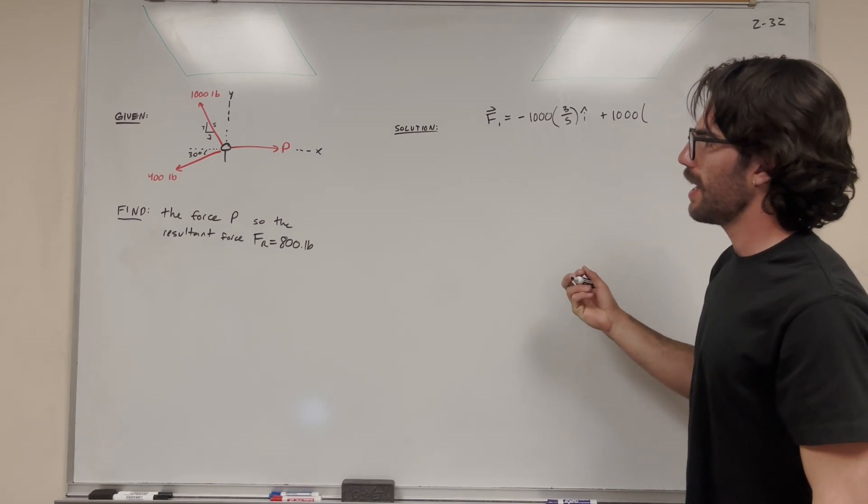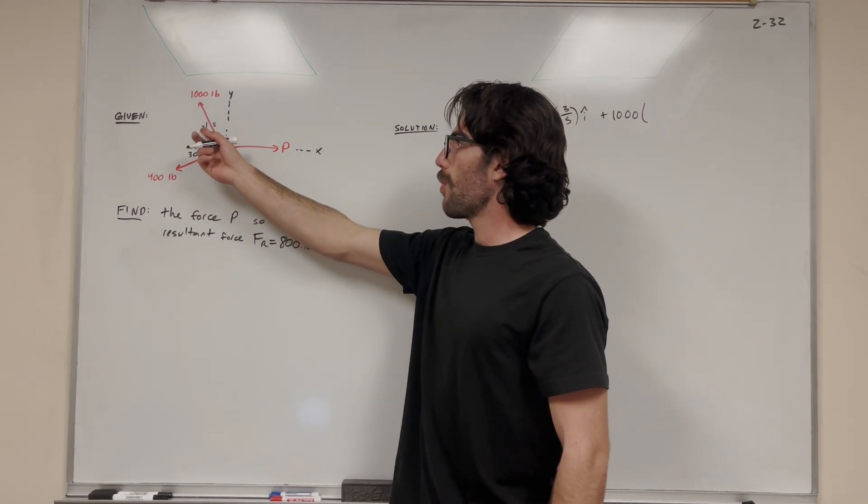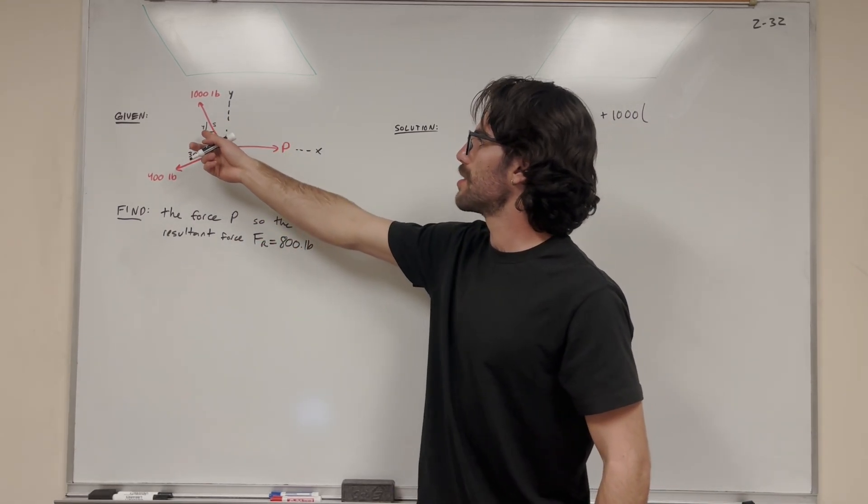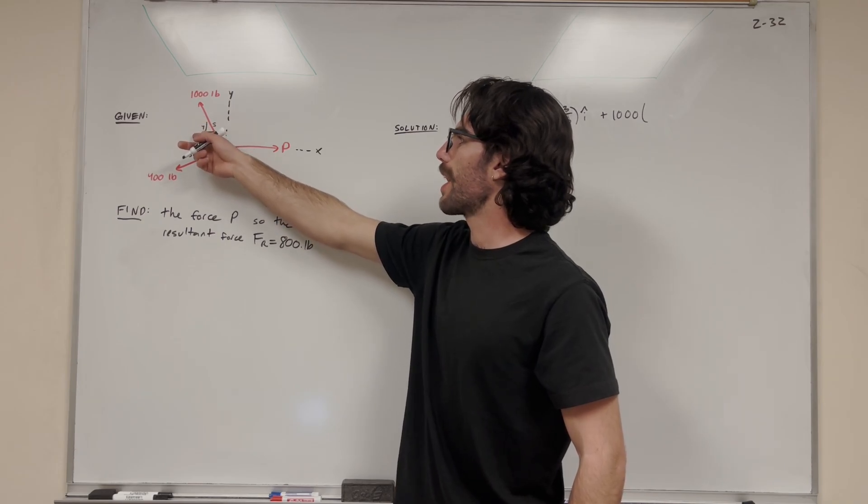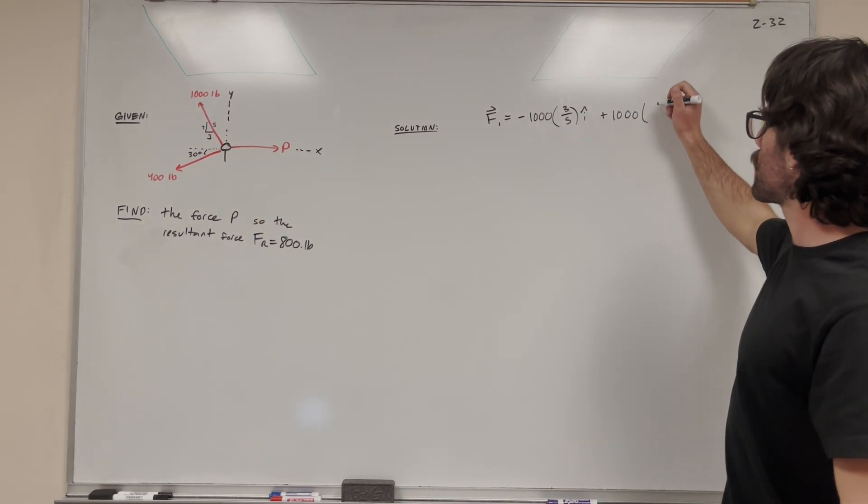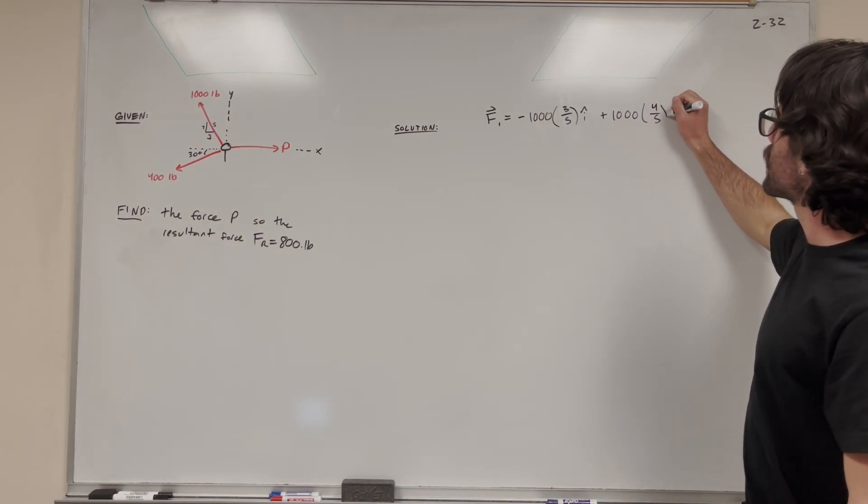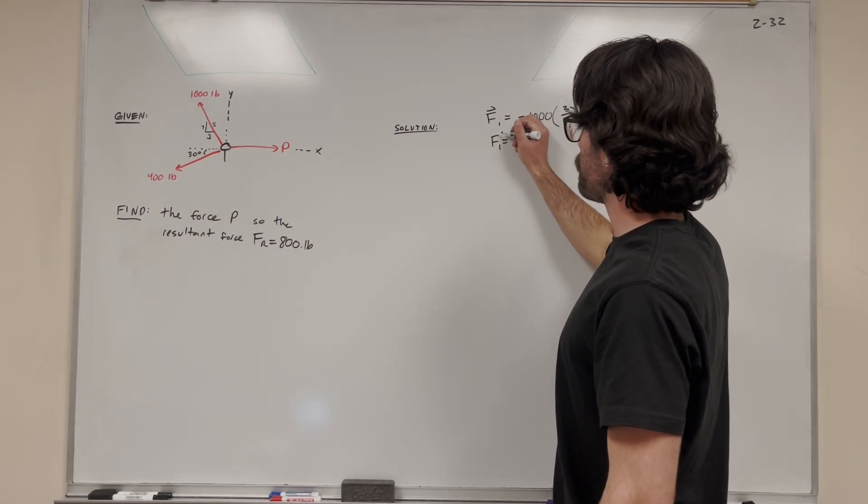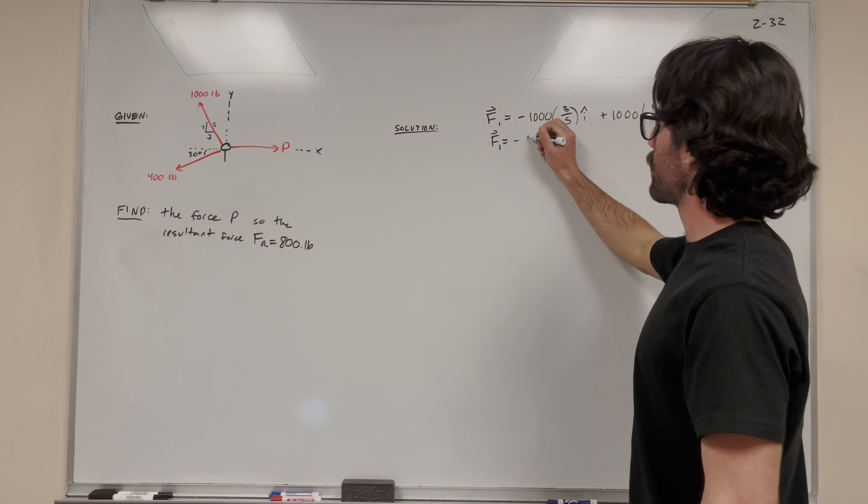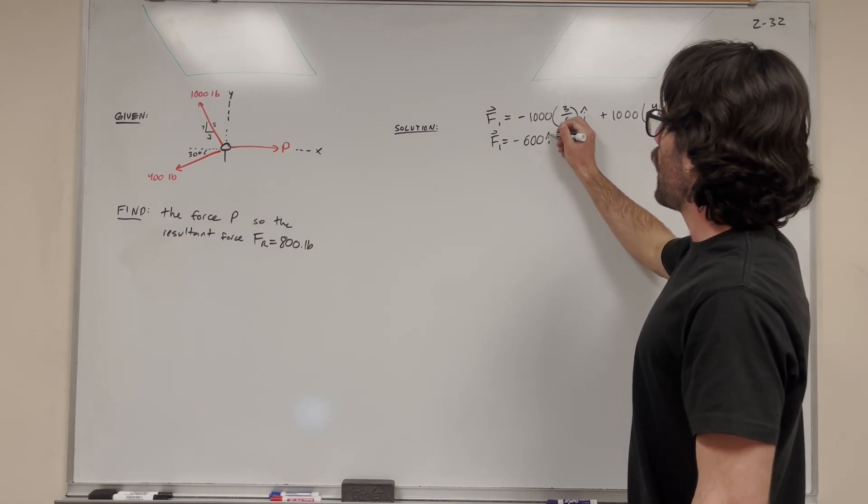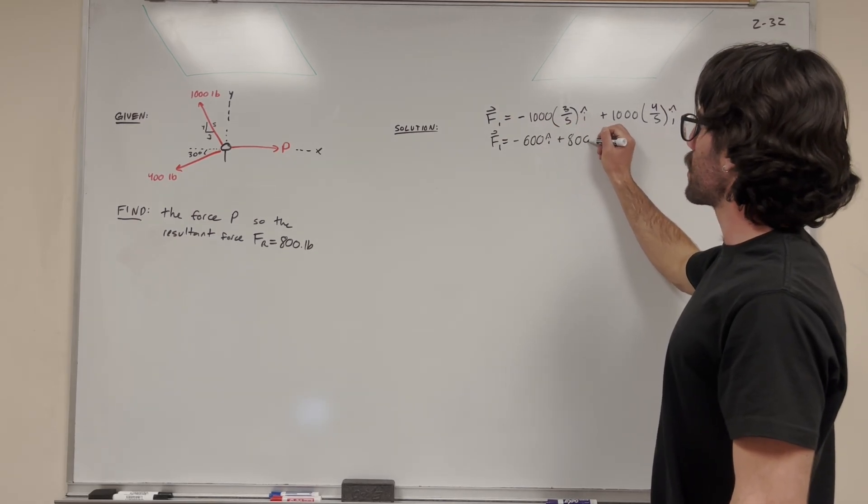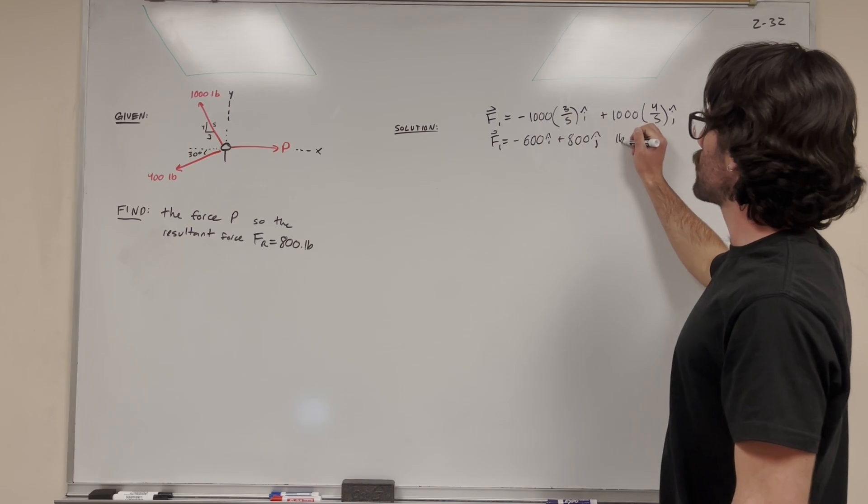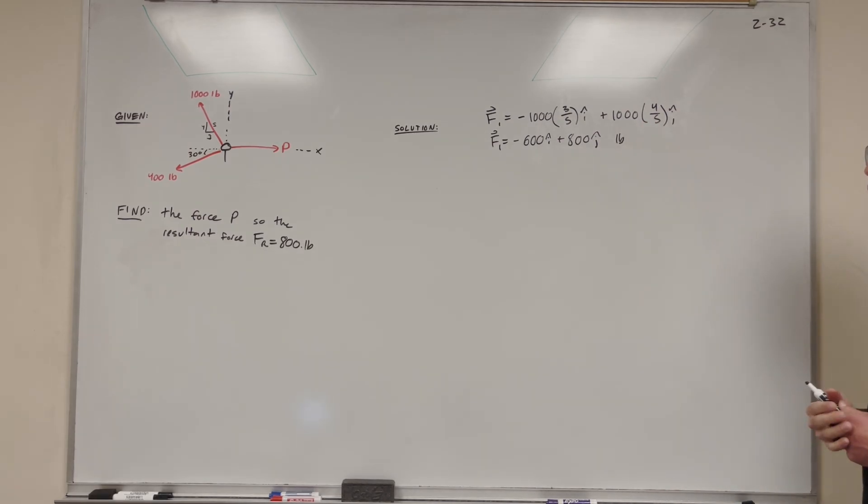So we're going to add 1,000 pounds, then multiply it by 4 fifths. The ratio is 4 fifths because the height of the triangle to its hypotenuse is 4 to 5. So 4 fifths j. This gives us force 1 as a vector equal to negative 600i plus 800j pounds. That's our first force.